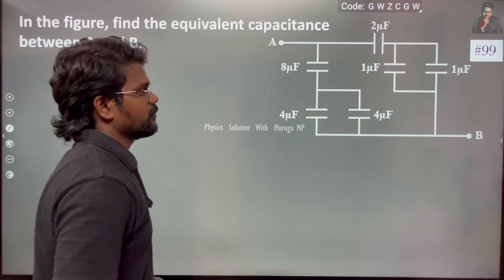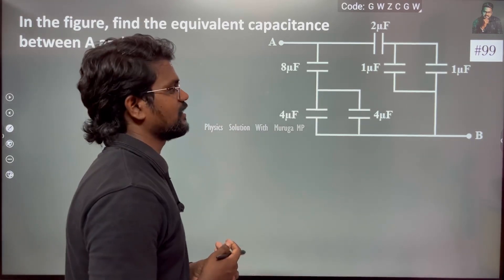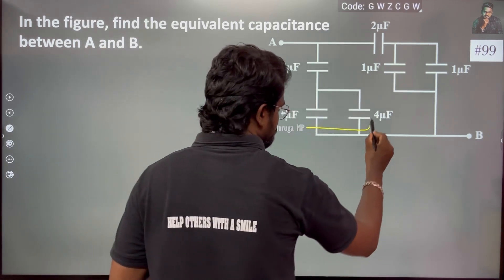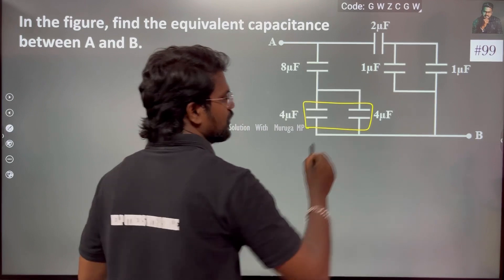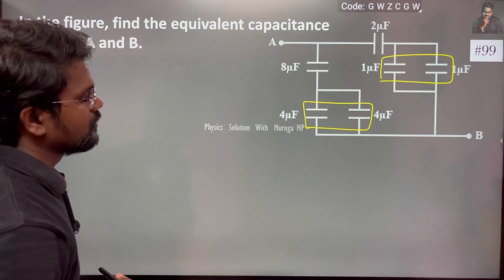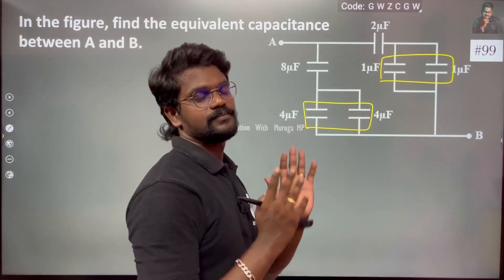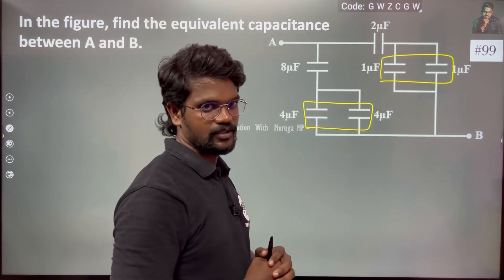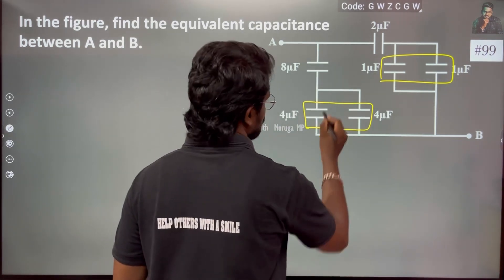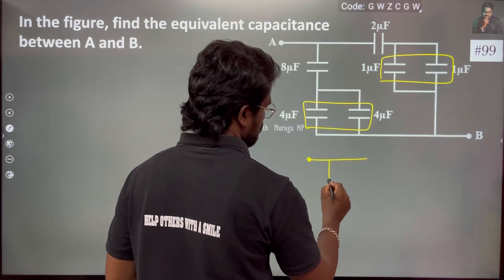If we look at the circuit and identify the parallel combination, for parallel we just add: Cp is equal to C1 plus C2.